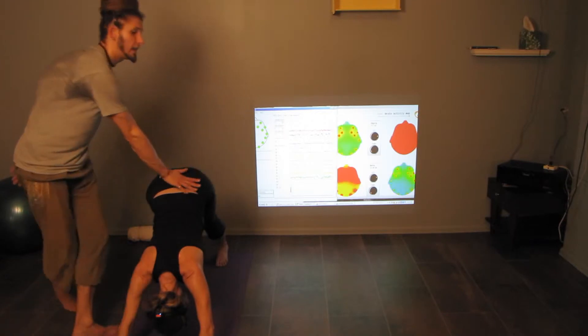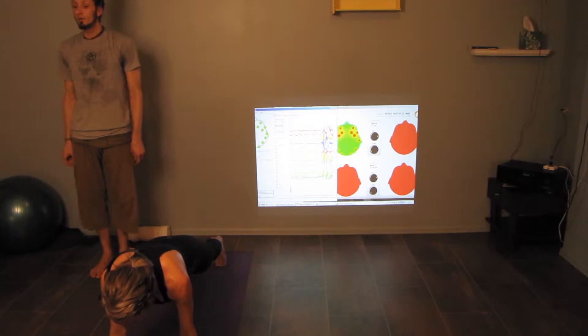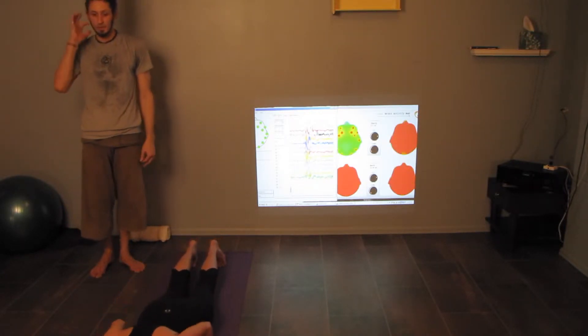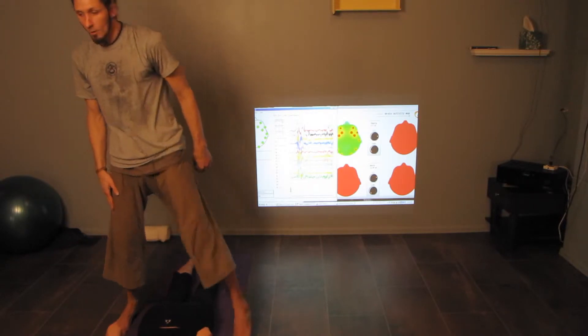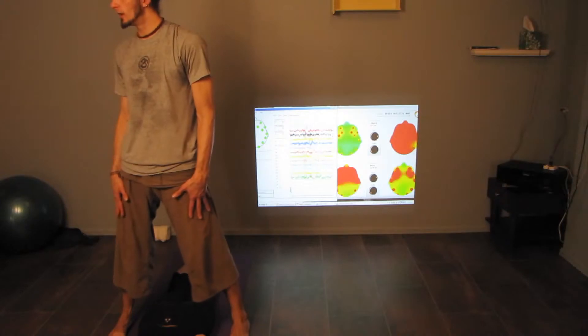With the next inhale, come forward into plank position. With the exhale, gently lower yourself all the way down to the ground. With the next inhale, with the tops of the feet on the ground, press up into a high cobra.